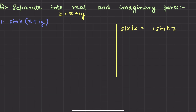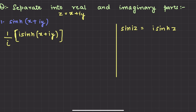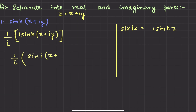So let's put it with iota. First step: we multiply with iota, so it becomes i·sinh(x + iy). Now if we multiply with iota, we also divide by iota. So here we have 1/i. In the second step, we've made the form i·sinh(z), and we take this 1/i. This becomes sin(i(x + iy)).